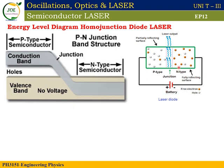When the battery is on, the P-type holes and the N-type electrons move toward the junction under forward bias. The depletion layer narrows and current flows.